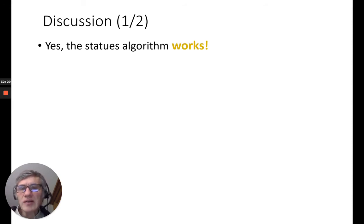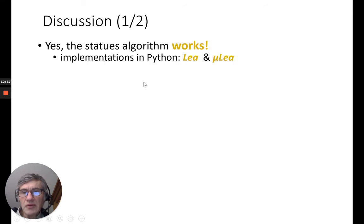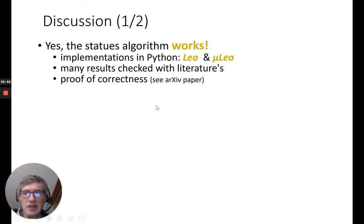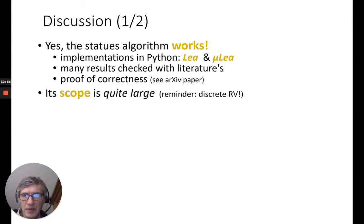So, let's discuss a bit about this algorithm. So, first of all, this works. It works because it has been implemented, but also many results have been checked with literature or books. And there is also proof of correctness, which you can read in the annex of an archive paper. I think the main asset of the algorithm is its scope, which is quite large. I mean by large, in the scope of discrete random variables. So, it covers joint probability distribution, Bayesian network, Markov chains, probabilistic arithmetic, and even a mix, a model mixing all these frameworks together.